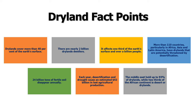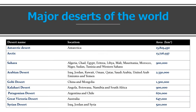Now we will look at the major deserts of the world and their locations. First is the Antarctic Desert, located in Antarctica — the largest desert, a cold desert covered with snow. Then the Arctic. Then the Sahara Desert, covering mostly African countries like Algeria, Chad, Egypt.